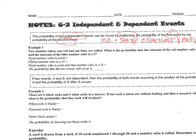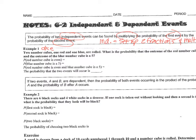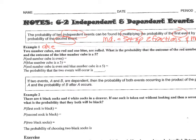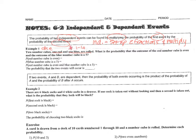Example one: two number cubes — a number cube is just a dice — one red and one blue are rolled. A dice has six sides, numbered one through six. What is the probability that the outcome of the red number cube is even and the outcome of the blue number cube is a five?